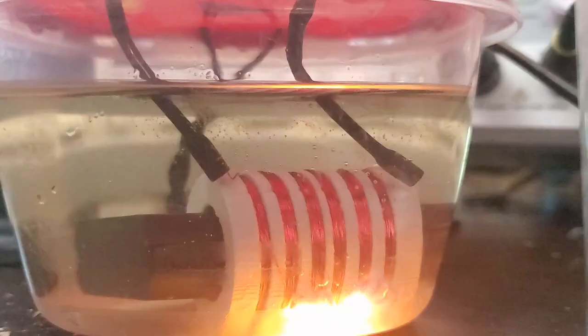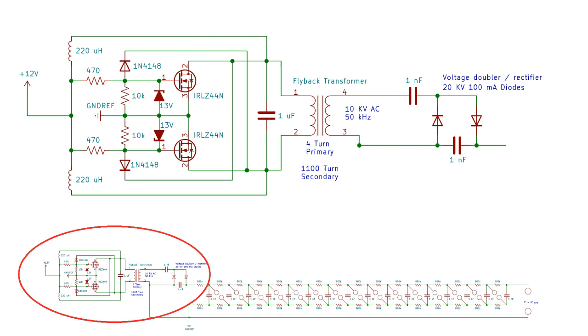The transformer puts out 10,000 volts AC, which is fed into a voltage doubler that also rectifies the current, giving me 20,000 volts DC. This doubler was placed in a 3D printed case and potted with polyester resin to keep the components from arcing to each other or to nearby objects.